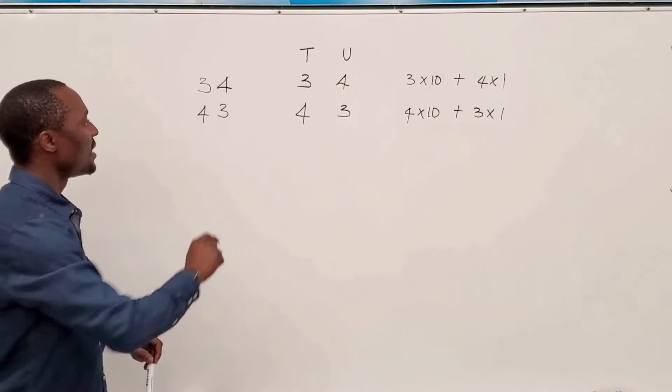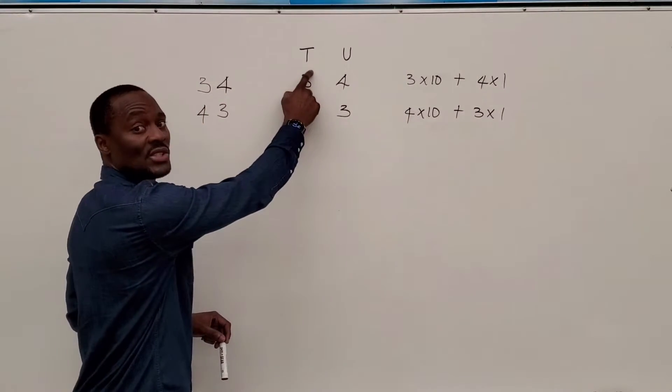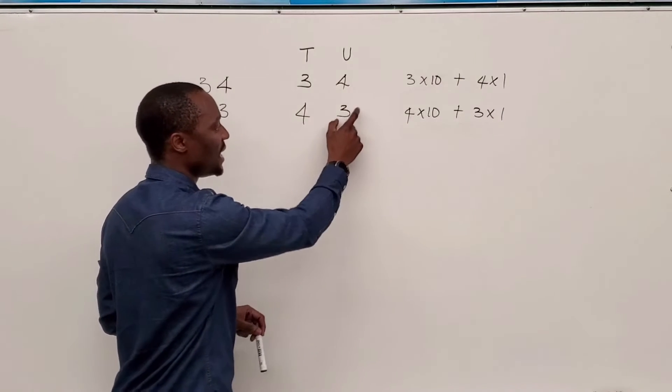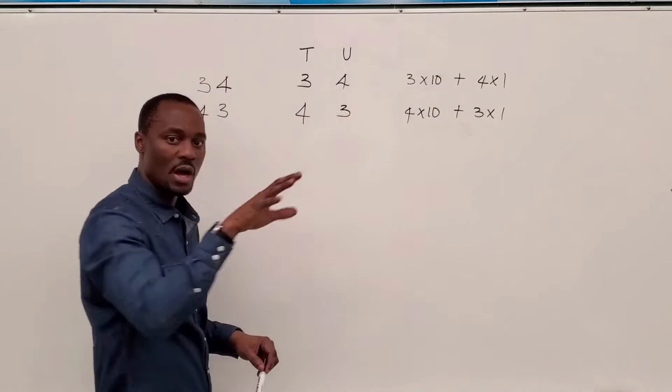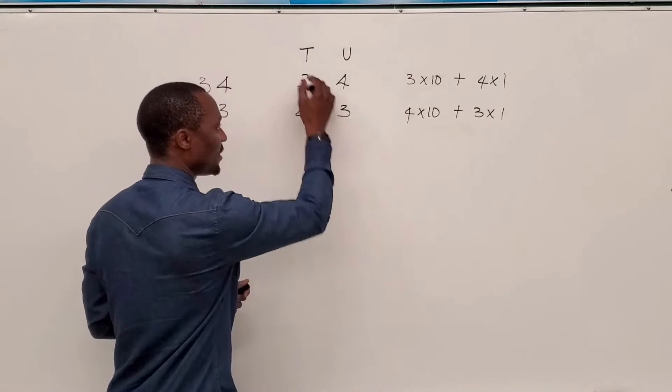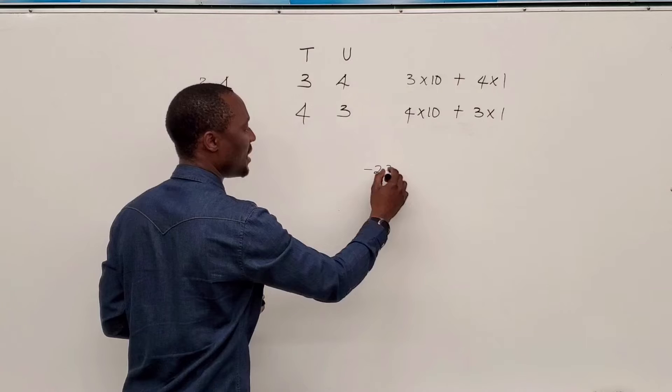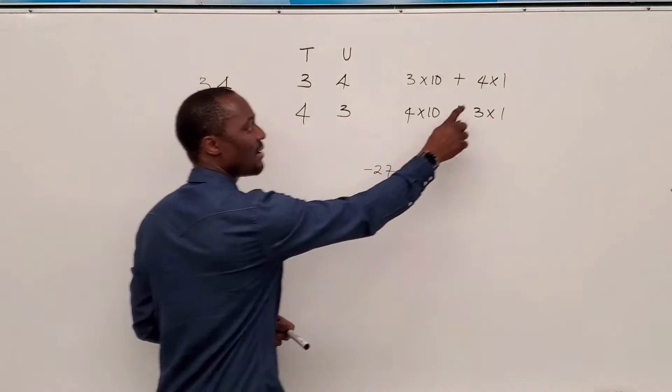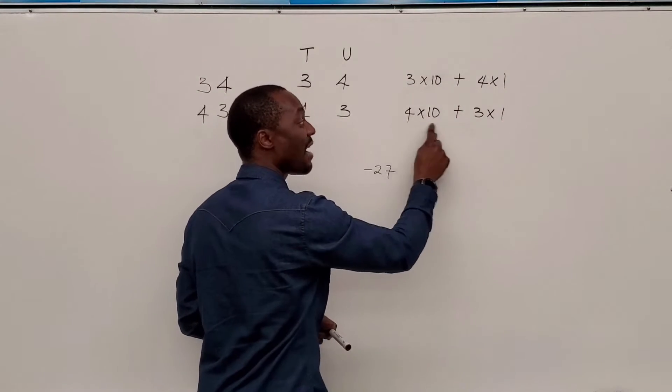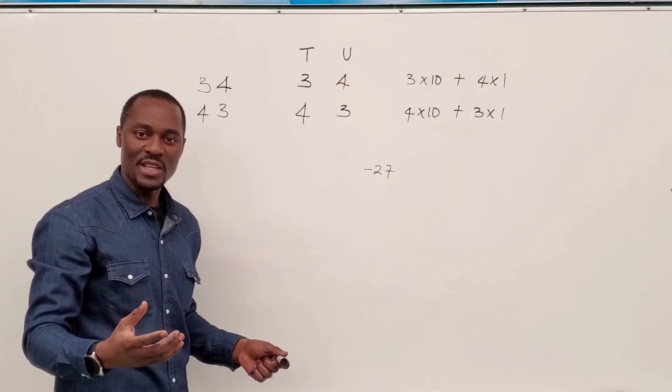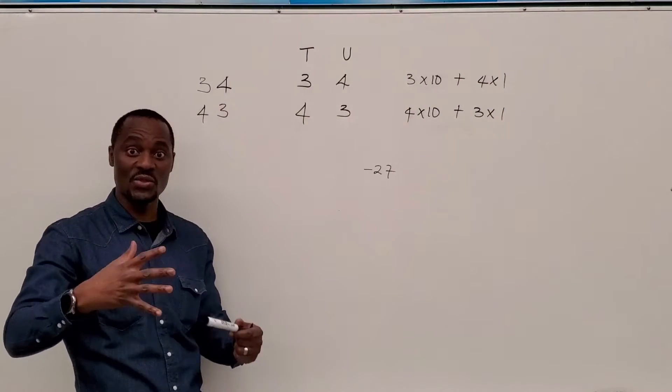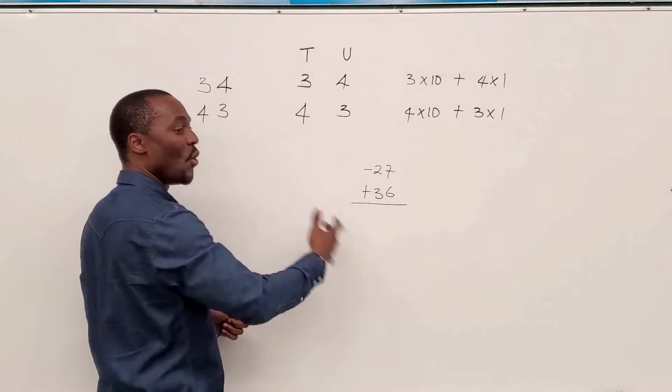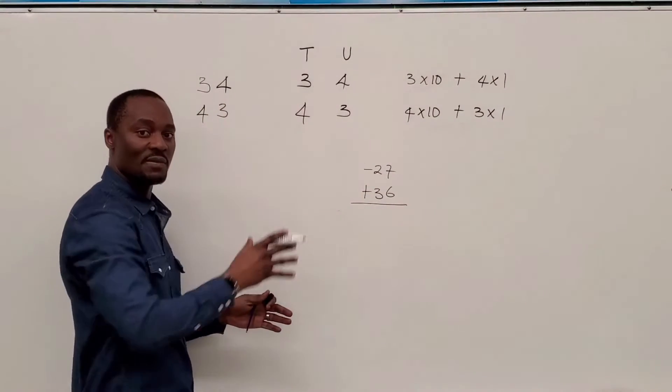Let's take the three. The value of the three has switched from 30 to become three. So there's a reduction of 27. This one has reduced by 27. But what has happened to the four? We have gone from simply having four units to having 40. So the value has increased from 4 to 40. That's 36. We've added 36 to it.